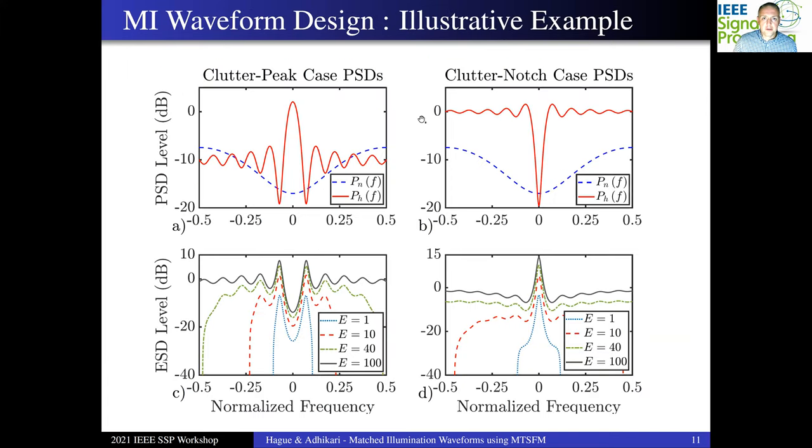What I'm going to show next are a series of illustrated design examples where we actually fit multi-tone SFMs to ideal MI waveform spectral shapes. There's two cases that we'll be looking at here, and I'm showing the power spectral densities for those two cases in the top two panels. Note that the noise power spectral density is the same for both cases, but the clutter is different. In the first case, called the clutter peak case, the power spectral density is an oscillatory function with a clearly defined peak at DC. In the clutter notch case, we have a largely flat spectrum with a clearly defined notch at DC.